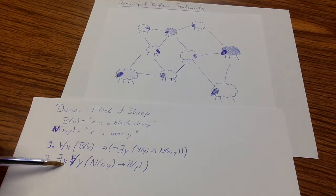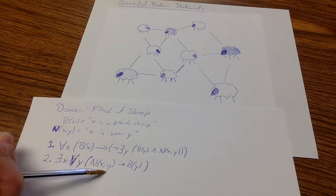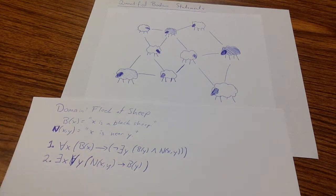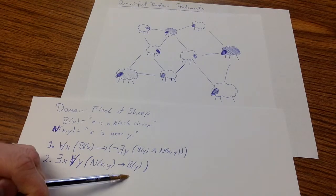Let's consider our second statement. There exists an x such that for all y, being x is near y implies that y is black. This is saying there is some sheep x such that for all y, if x is near y, then y is black.